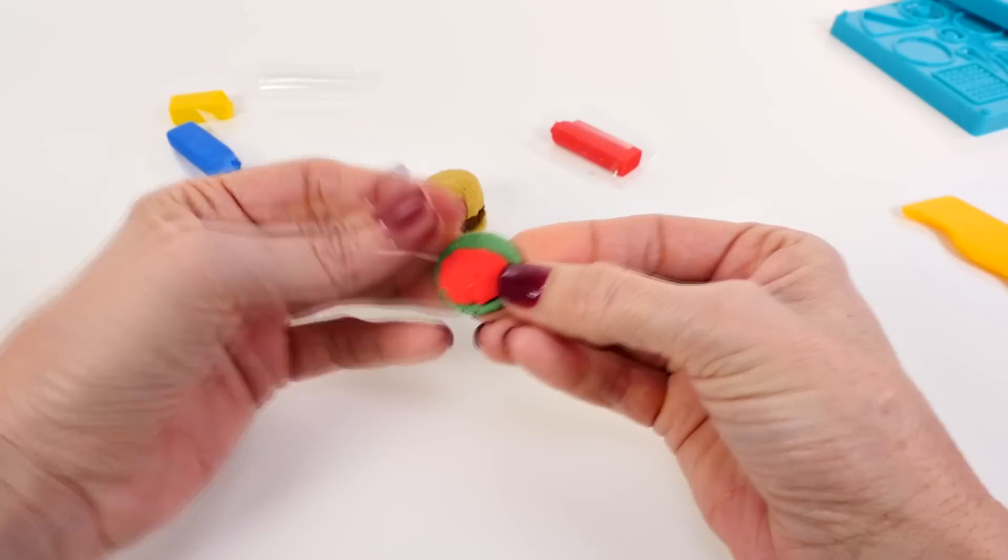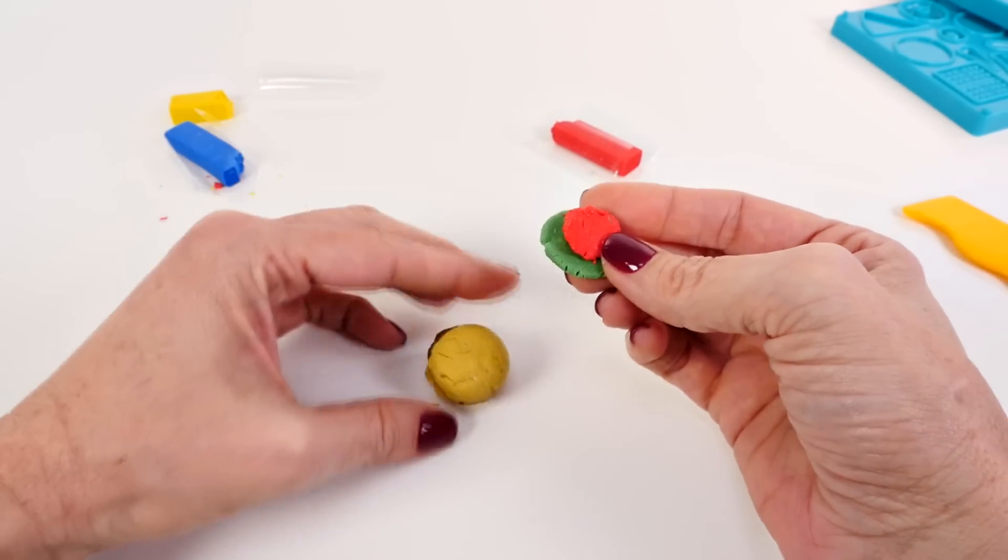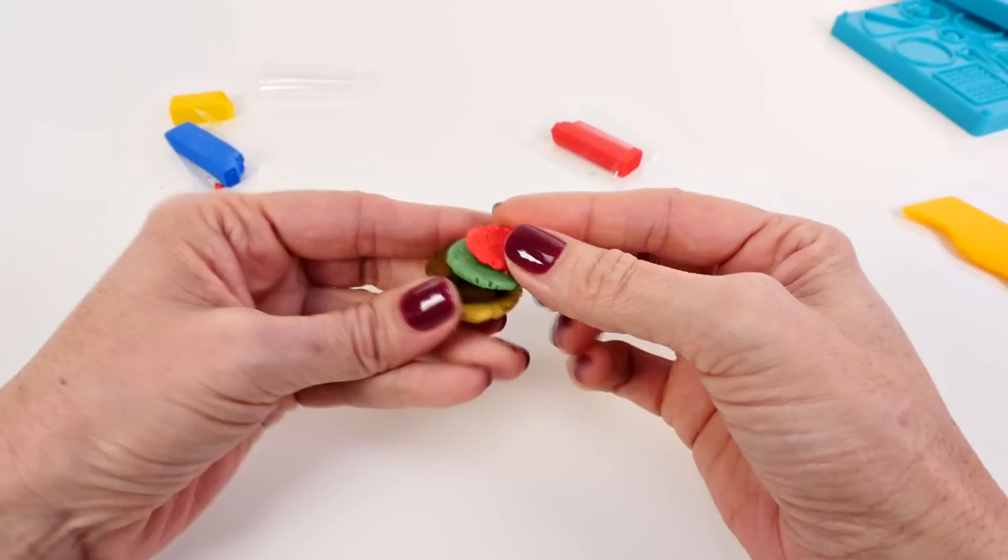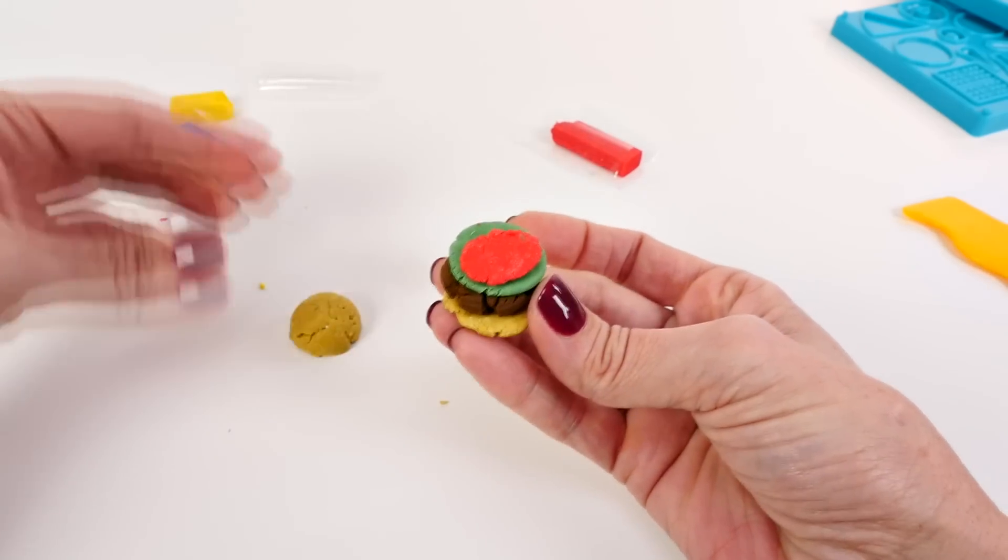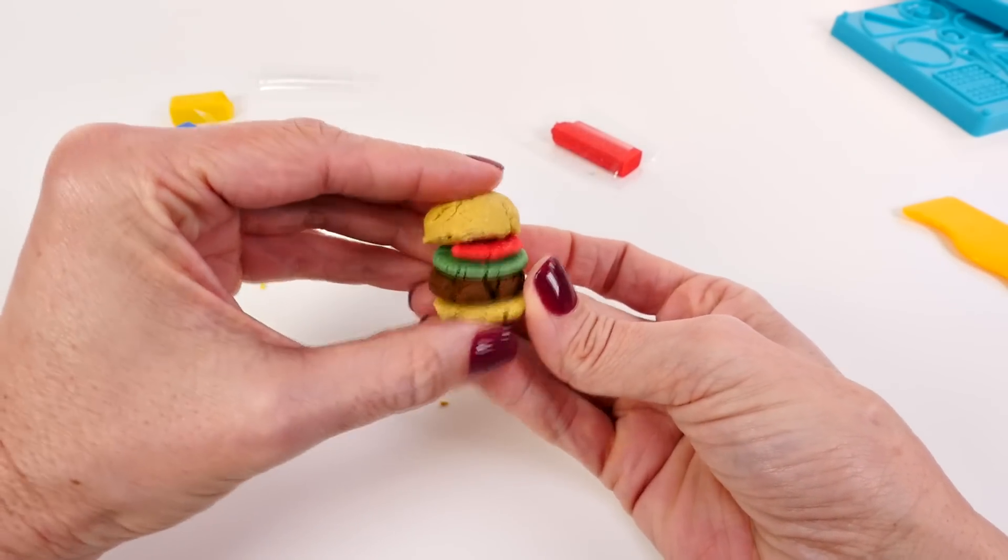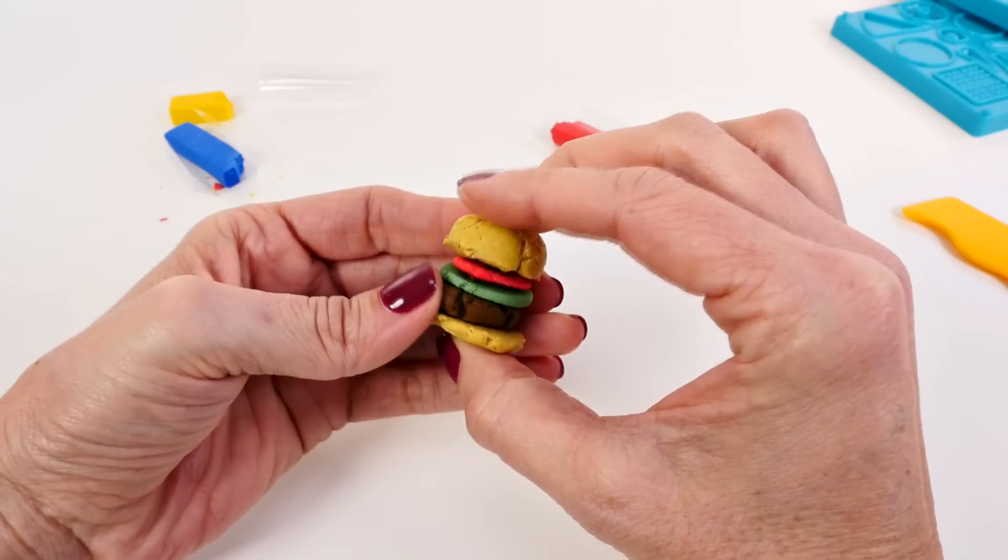The red was really hard and crumbly, so that's about the best I could do. Now we can put this on our hamburger and we will bake this now and see how it turns out.